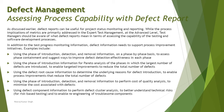One example is using phase of introduction, detection, and removal information on a phase-by-phase basis to assess phase containment — that is, how many defects were found in the same phase where they were introduced — and to suggest ways to improve defect detection effectiveness in each phase. When you identify defects during a requirement review, you count how many were contained within that phase. Phase containment represents the minimum cost of fixing a defect.